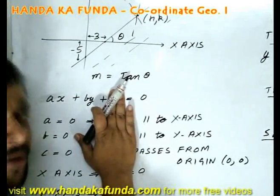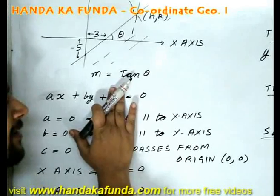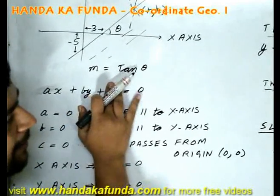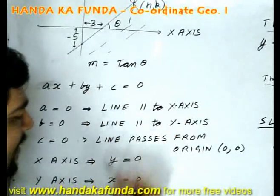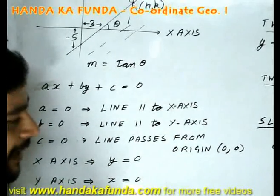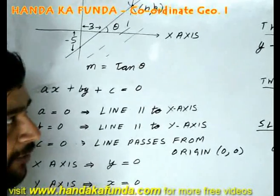If my line is ax plus by is equal to 0 and I put x is equal to 0 and y is equal to 0, what will I get? This will become 0, this will become 0, and this will be equal to 0 once again. The equation of the x-axis will be y is equal to 0, and the equation of the y-axis will be x is equal to 0.